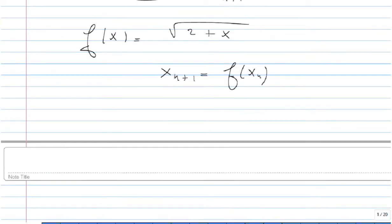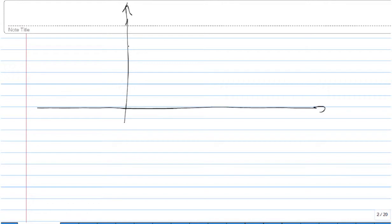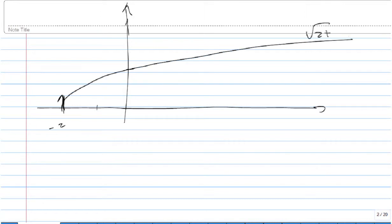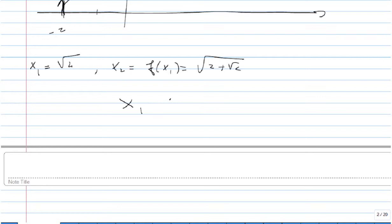Let's check some properties of this function f. The graph is very easy — it's just the square root of x shifted 2 units to the left. We go back to -2, and at 0 we get √2. So this is the graph of √(2+x). We see that the function is increasing. And if we take the first two elements, we have x₁ = √2, and x₂ = f(x₁) = √(2+√2). We see easily that x₁ < x₂.